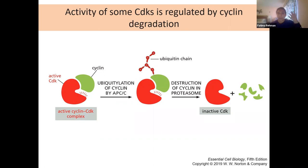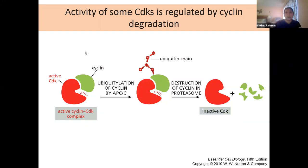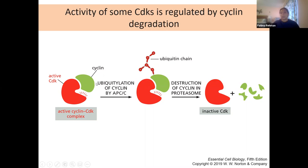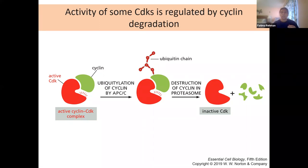These cyclins and CDKs work through multiple mechanisms — some through activating phosphorylations, but also regulated by degradation of the cyclin itself. The CDK is activated when a cyclin is bound to it; when the job is done, ubiquitination of the cyclin leads to its degradation through the proteasomal pathway, inactivating the CDK. CDKs are always present at a constant level; it is the cyclical production of cyclins that controls CDK activity.